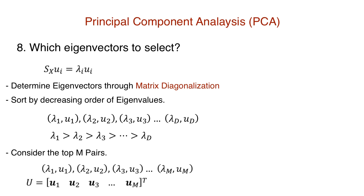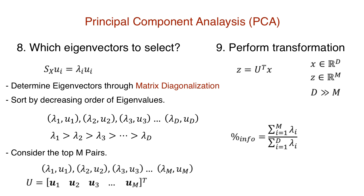So we now have our transformation matrix U. Now the final question is, how do we actually perform the transformation? Remember, z is equal to U transpose x. So we can transform a d-dimensional vector x to an m-dimensional vector z while still retaining percentage info variance in data. Now that's awesome. This is the fundamental idea behind dimensionality reduction with PCA.